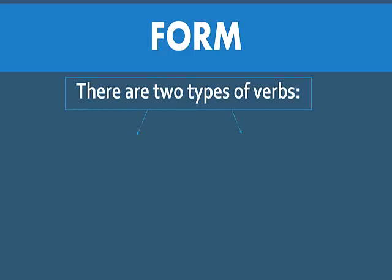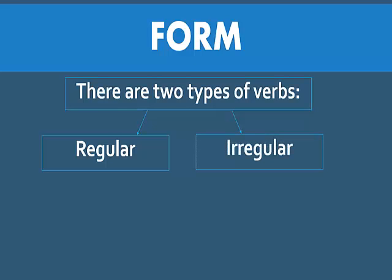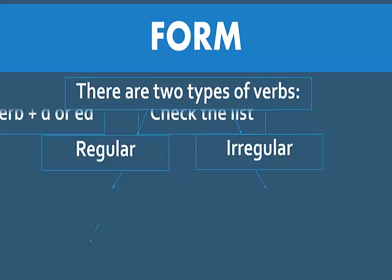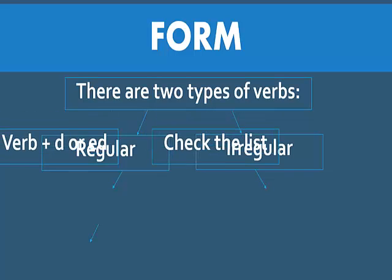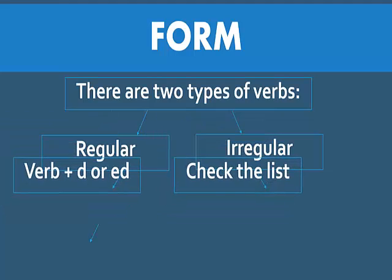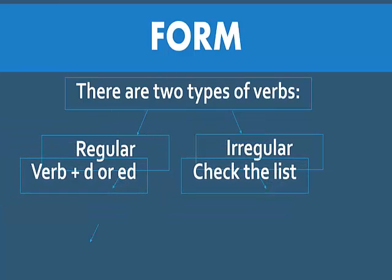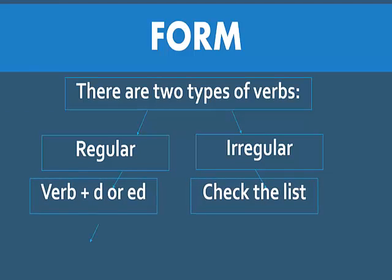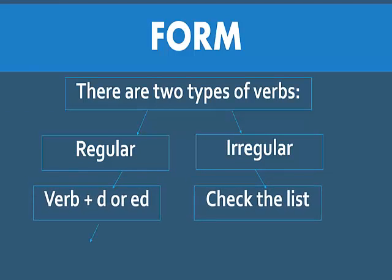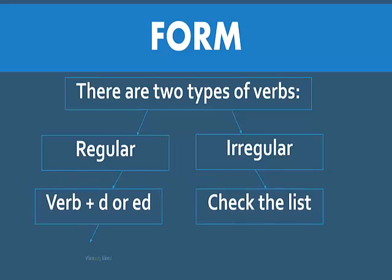I know that you know there are two types of verbs: regular verbs and irregular verbs. When we speak about regular verbs, these are basically verbs that end in -ed. Ask me about a regular verb because you can check the list and you're going to find the -ed verbs.